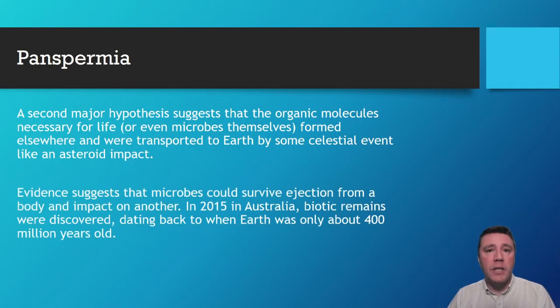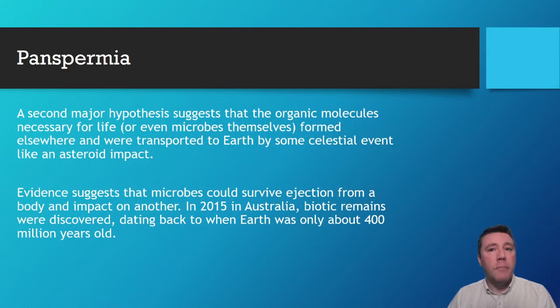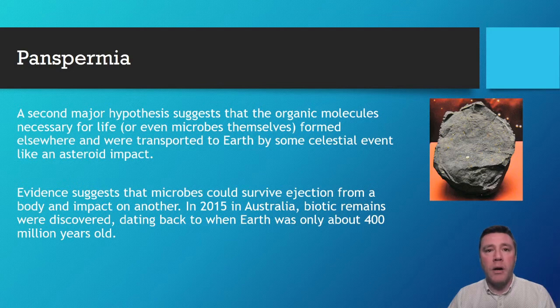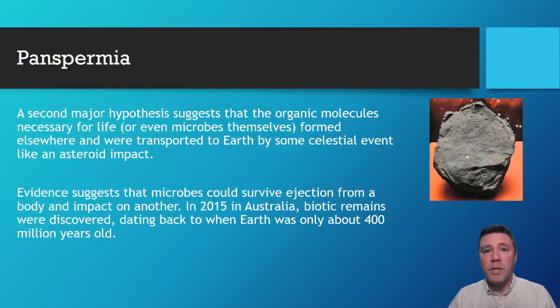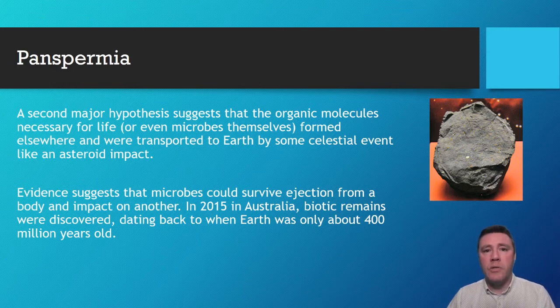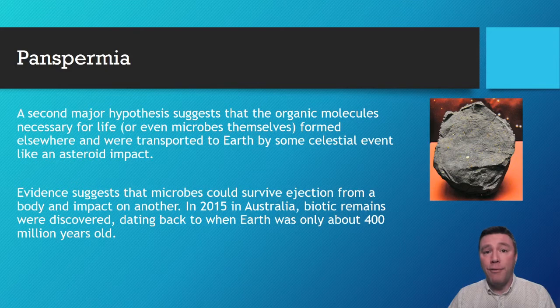In 2015, the biotic remains of living things were discovered in Australia, dating back to when the Earth was only about 400 million years old. A meteorite that fell to Earth in 1969 brought with it a collection of various organic compounds. Analysis of the 7 billion-year-old 100-kilogram Murchison meteorite has identified over 15 amino acids, purine and pyrimidine compounds, and a number of other organic molecules. The specimen demonstrates that many organic compounds could have been delivered to Earth by early solar system bodies and may have played a key role in the origin of life here.